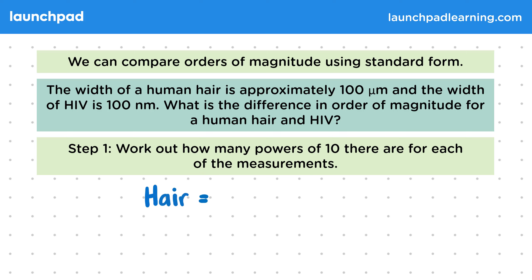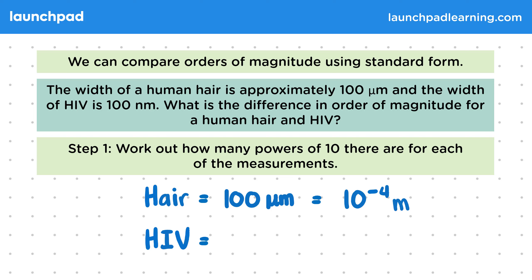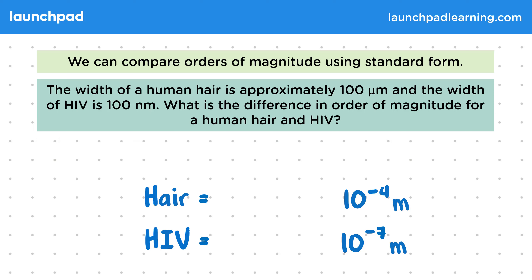We note that the width of a human hair is 100 micrometres. To be able to compare this to HIV, we have to convert the numbers into powers of 10. 100 micrometres is equal to 10 to the power of minus 4 metres. HIV is 100 nanometres, which is equal to 10 to the power of minus 7 metres. These powers of 10 are the orders of magnitude.